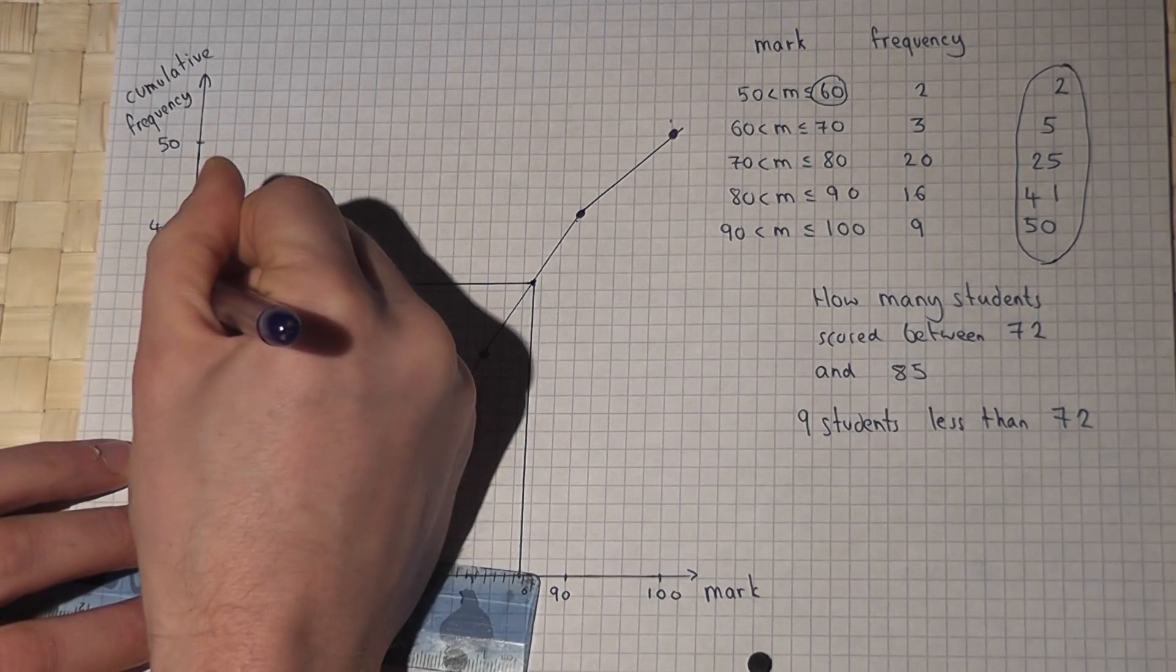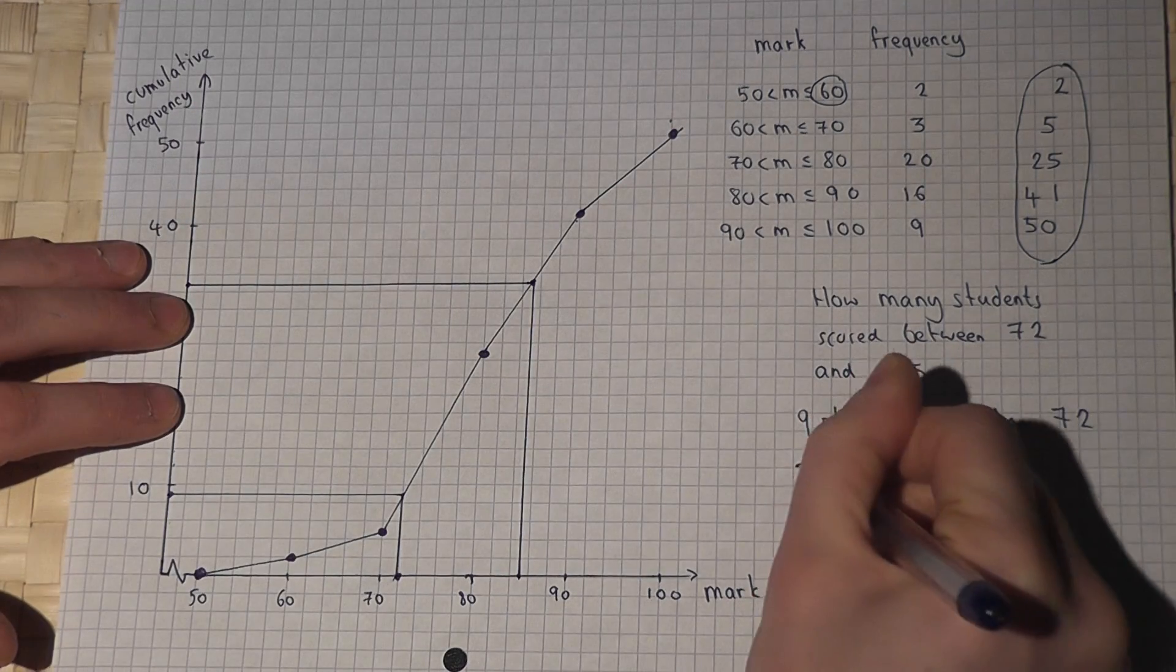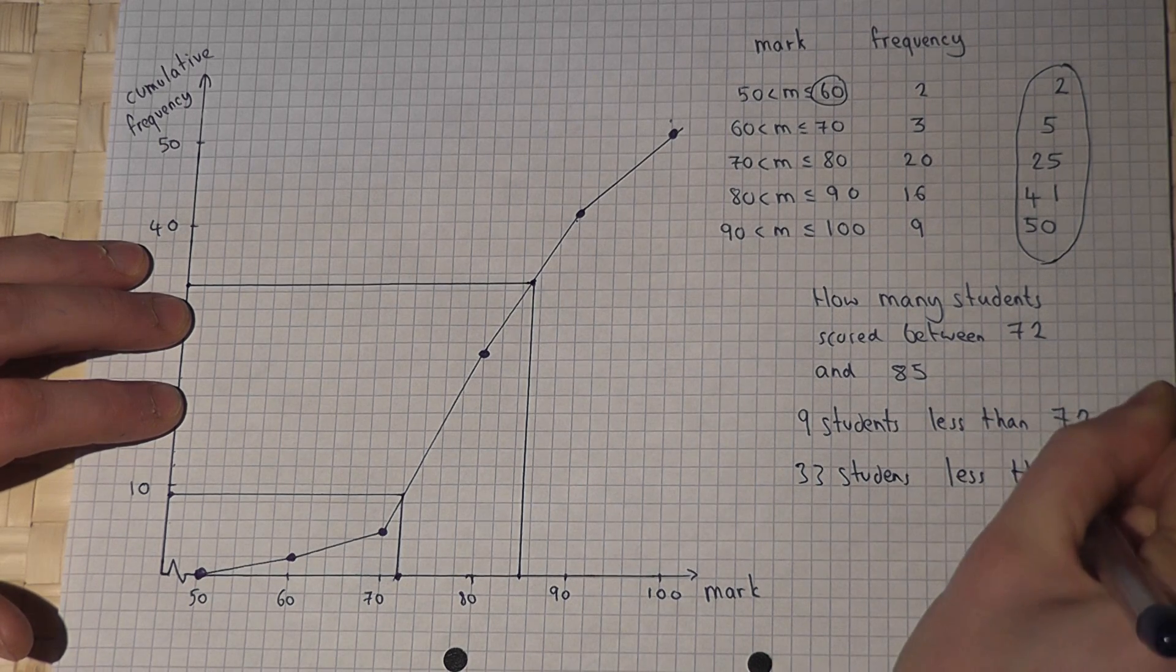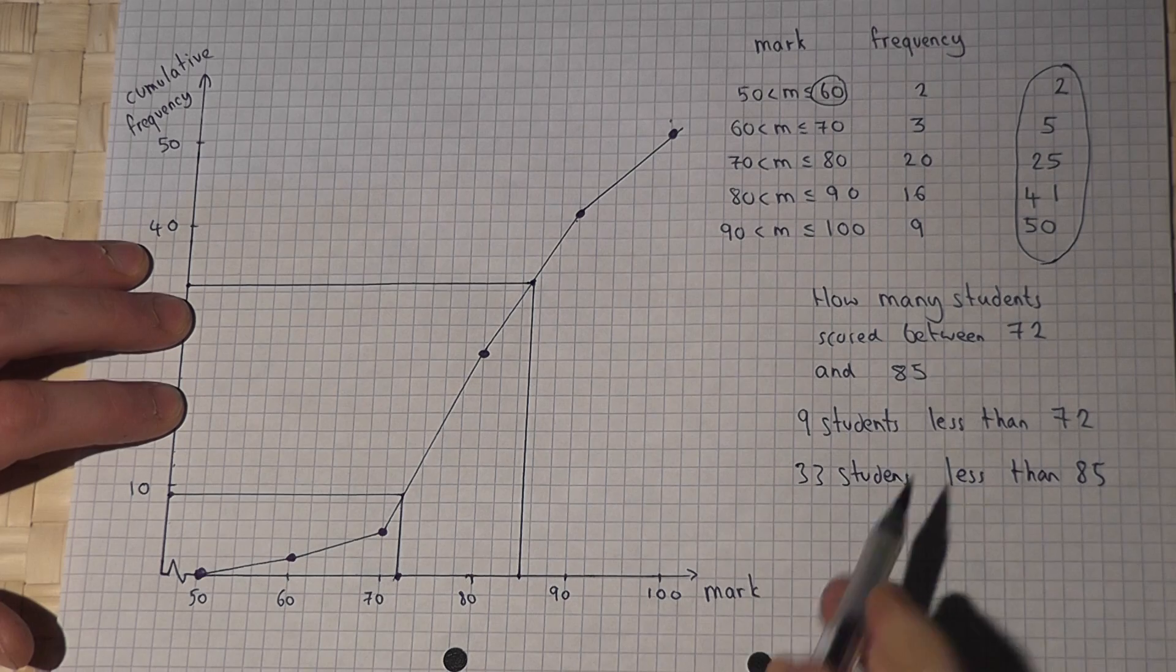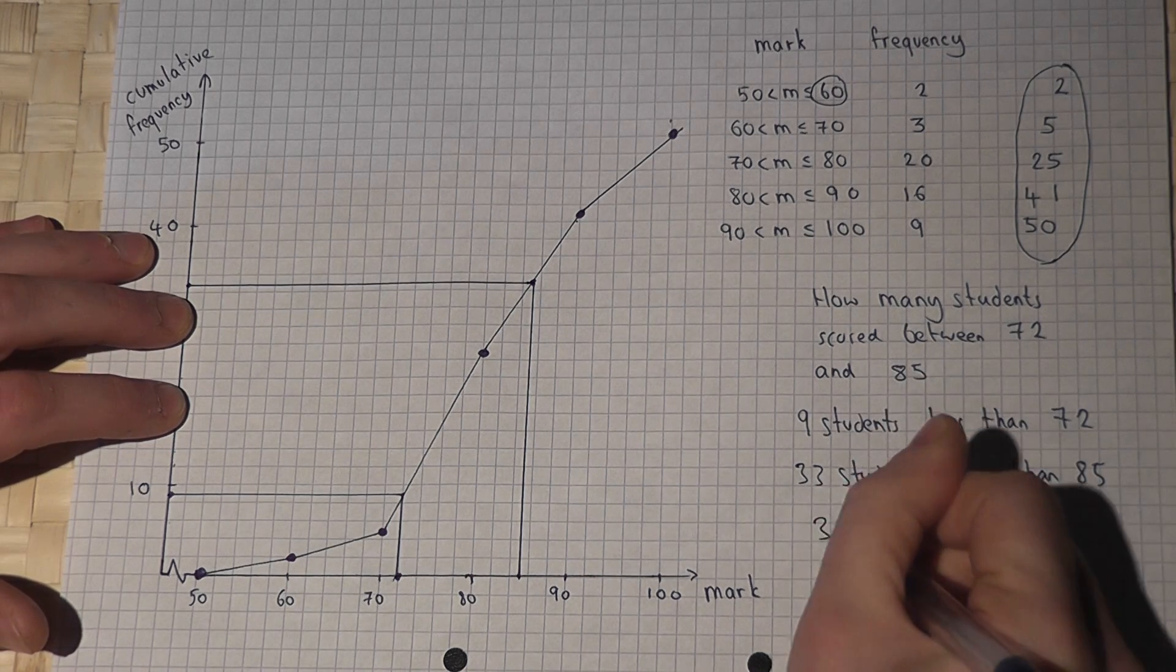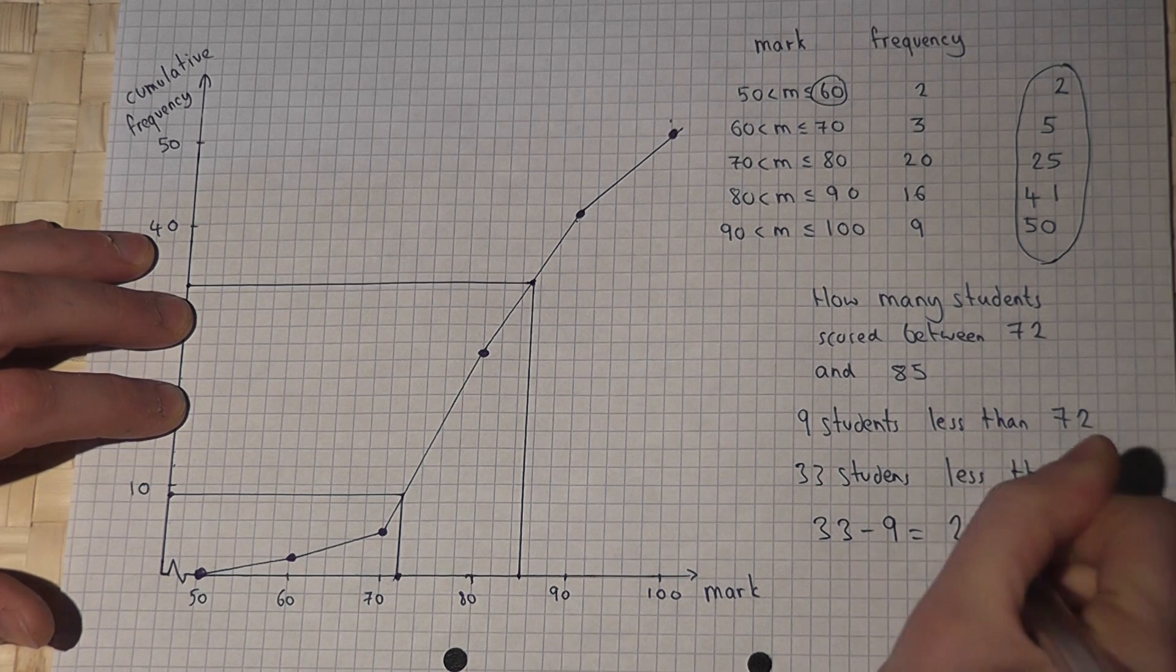Then this graph shows me that 33 students were less than 85. So the number of students who scored between 72 and 85 is 33 take away 9 which is 24.